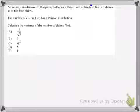And that last example is involving my favorite probability distribution, and that is Poisson. It's got a French name. It's easy. It's got an E in there. What's not to love? So our question here is that we've got an actuary who has discovered that policies are three times as likely to file two claims as to file four claims.